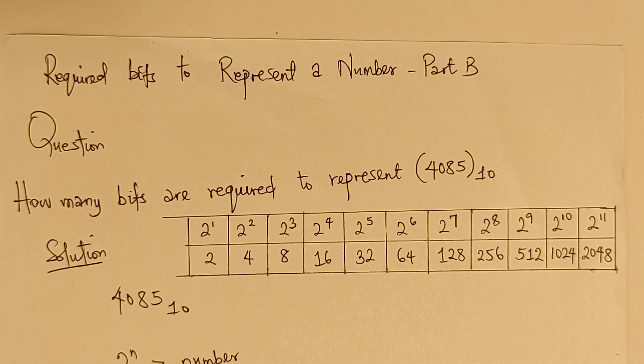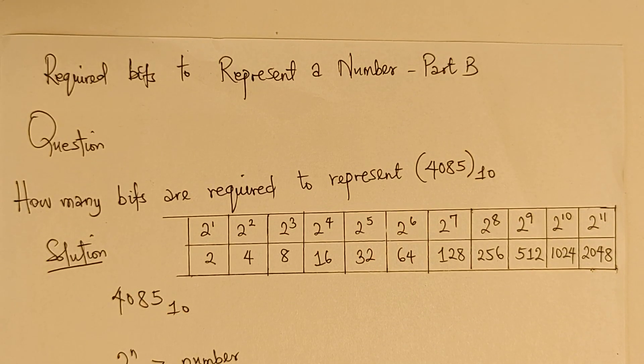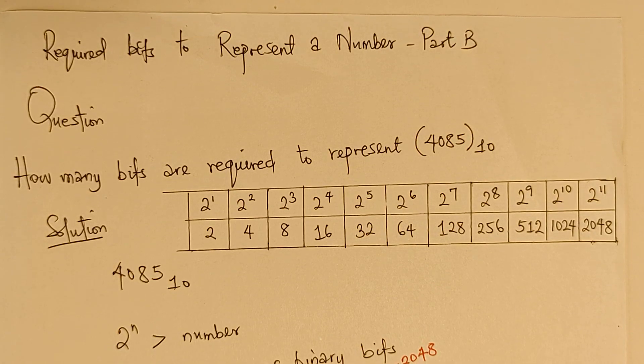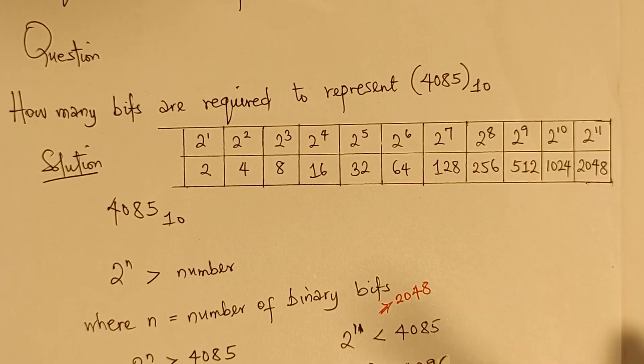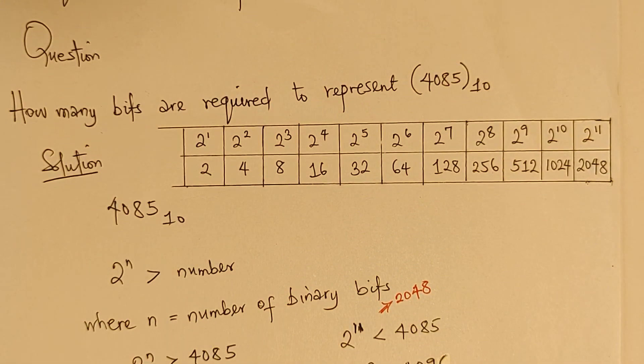So, all we need to do is to write out the value in the question which we have 4085 in base 10. And with the formula, we are going to say 2^N greater than the number. Now, what is the number? The number is literally 4085.